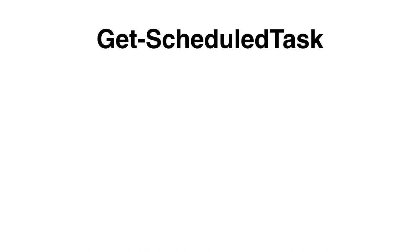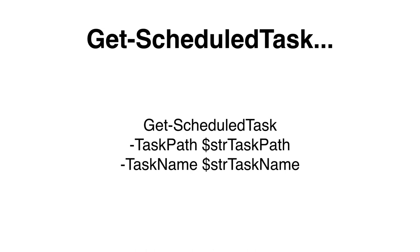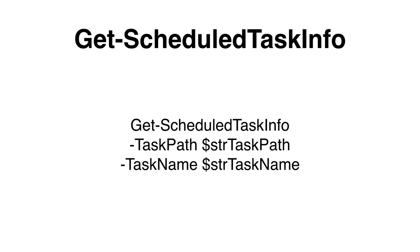If we would like to retrieve a registered task as an object, we can use the Get-ScheduledTask cmdlet, providing the TaskPath — the folder name where the task has been registered — and the task name. If we would like to retrieve information on a registered task such as LastRunTime, LastTaskResult, and NextRunTime, we can use the Get-ScheduledTaskInfo cmdlet.